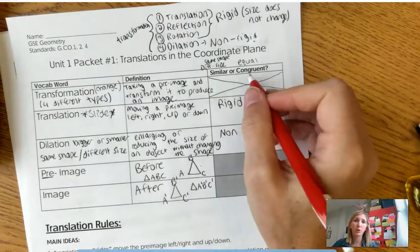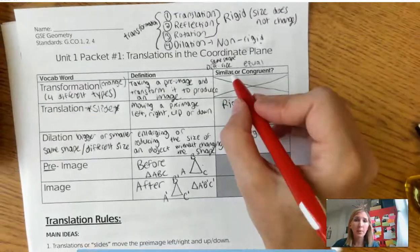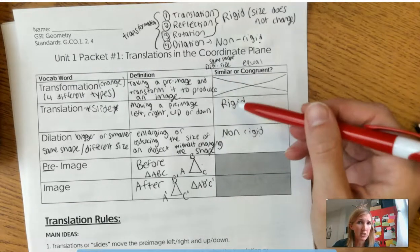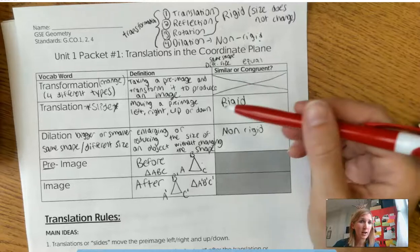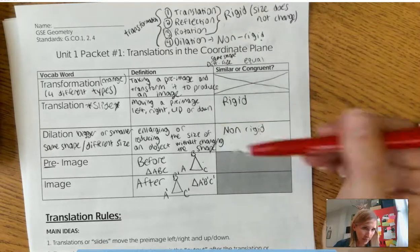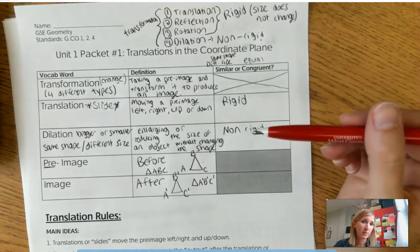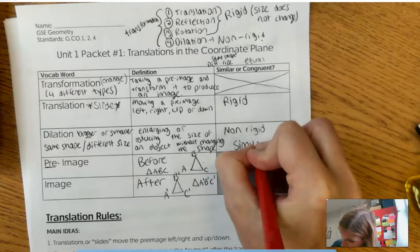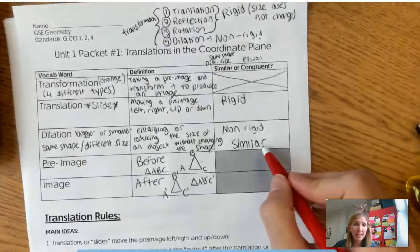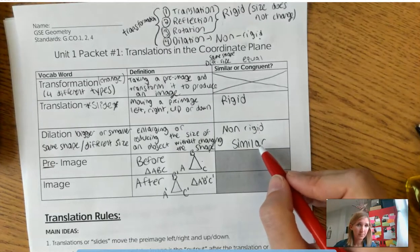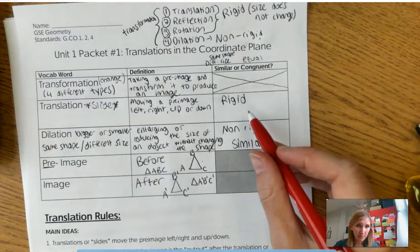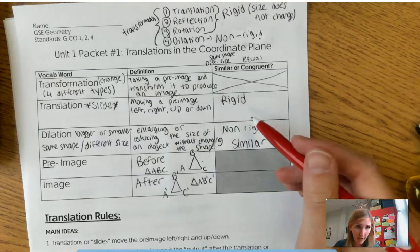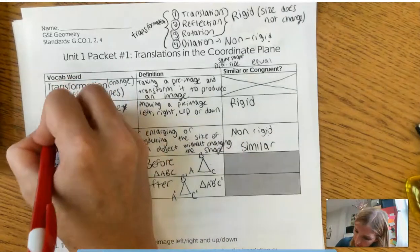Alright. With respect to the word similar or congruent, remember similar meant same shape, different size. Which one does that sound like to you? Same shape, different size. Does that sound like translation, or does it sound like dilation? I hope you said dilation. So dilation, the pre-image and the image are similar.